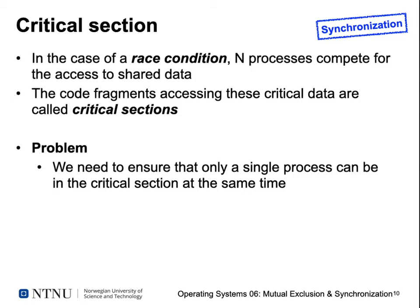Interrupting a critical section may lead to errors like in our linked list example. What we need to ensure is that only a single process can be in the critical section at the same time. Note that there is not only one critical section in the whole system — a critical section depends on the data you're accessing. If two processes access completely different memory ranges, that is not a problem. We need to protect only the shared critical data.